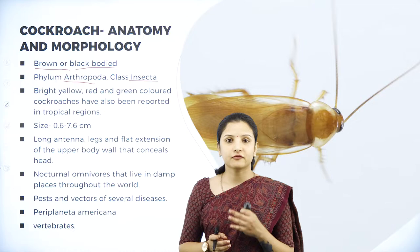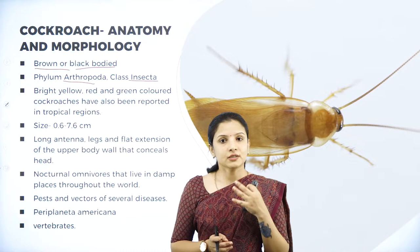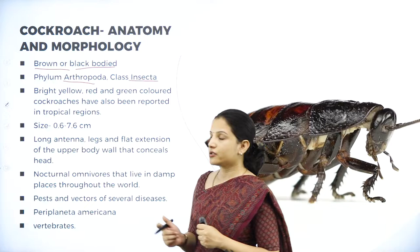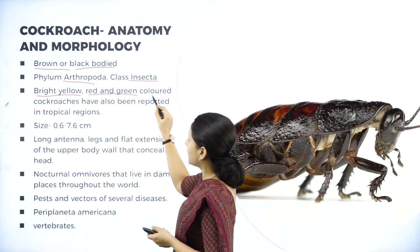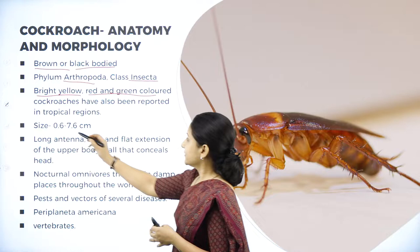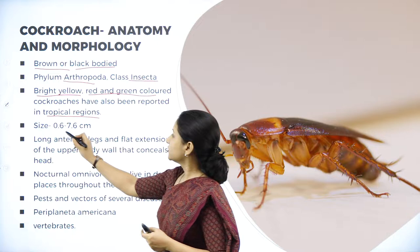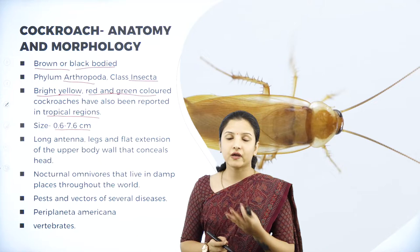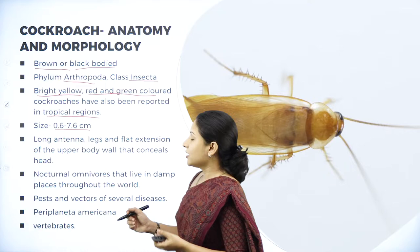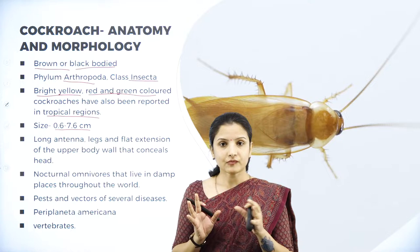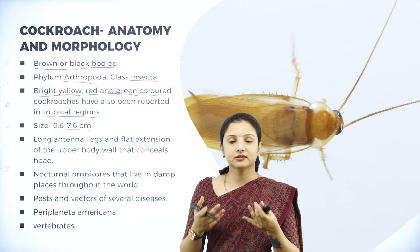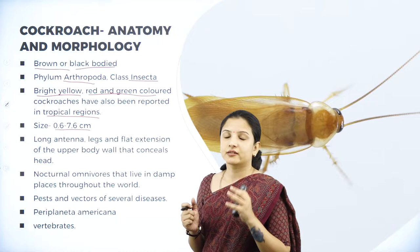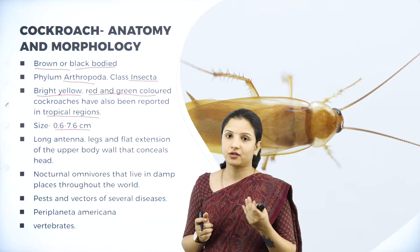Cockroaches belong to the kingdom Animalia, phylum Arthropoda, and class Insecta — they are insects belonging to phylum Arthropoda. The most important characteristic of Arthropoda members is having an exoskeleton, and the cockroach also has an exoskeleton. They can also be bright yellow, red, and green in color, especially in tropical regions. The size of the cockroach is about 0.6 to 7.6 centimetres. They have long antennae that act as sensors so the cockroach can detect smells, food particles, and communicate with other cockroaches — the antennae are the sensory organs.